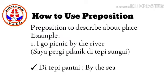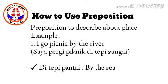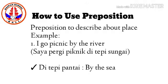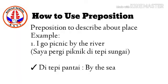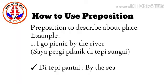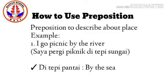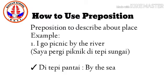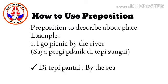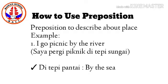First, there is preposition to describe about place. Here is the example: I go picnic by the river. Here we use preposition 'by' to describe about place. Pada contoh di atas yang memiliki arti saya pergi piknik di tepi sungai, kata preposisi 'by'.